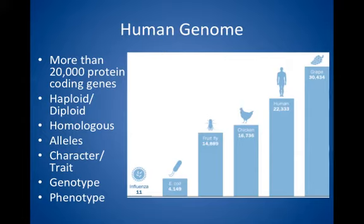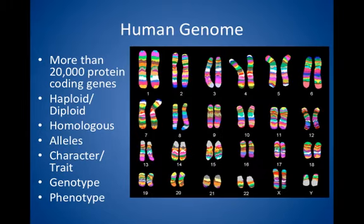Genes are the way in which an organism is able to respond to its environment and pass on instructions to make proteins important for its functioning, feeding, and reproduction. We talked a little bit about a karyotype — in the meiosis and mitosis unit — where a karyotype is an expression of all the chromosomes that an organism has.